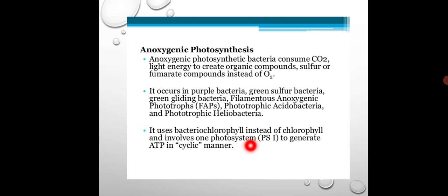Anoxygenic photosynthesis uses the bacteriochlorophyll pigment instead of normal chlorophyll. Plants use just chlorophyll, while bacteria use bacteriochlorophyll. Bacteriochlorophyll is similar to chlorophyll but absorbs light strongly in the infrared region between 700 to 1000 nanometers to carry out the photosynthesis process.